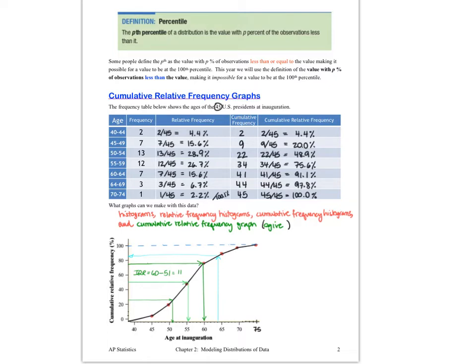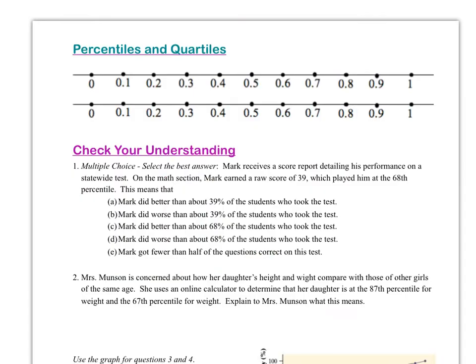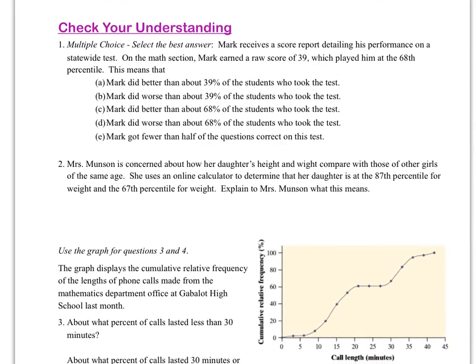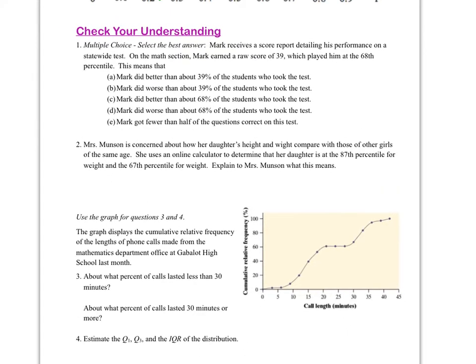The ogive is useful because it lets us see where a specific data point falls in the distribution in terms of percentile, great for comparisons. The box plot, based on quartiles, also allows comparative studies — percentiles and quartiles are closely related. The five-number summary breaks data into four quarters, while percentiles break it into 100 pieces. The first quartile corresponds to the 25th percentile, Q2 to the 50th, and Q3 to the 75th percentile. Pause the video now and work on the check for understanding on page 89 of your textbook.